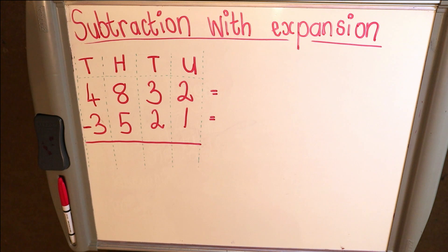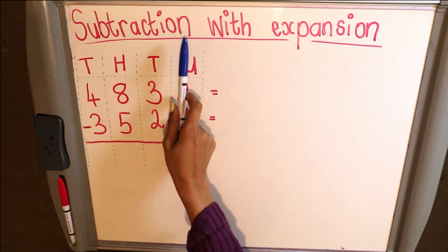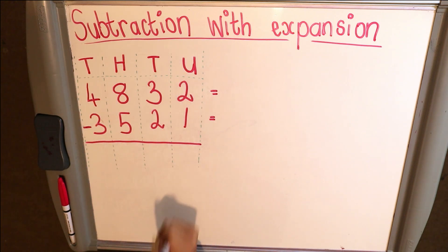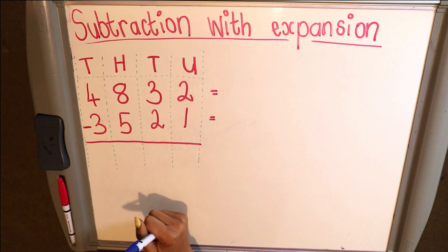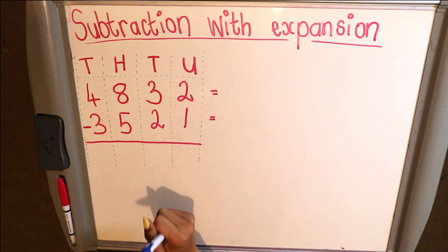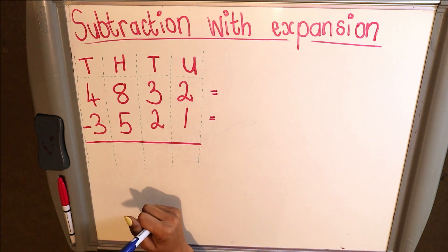Let's look at the first example. One thing you would notice is I've placed all my numbers in the particular columns. This is extremely important, especially when you're in Grade 4 and 5 — you need to place numbers in the correct column so that you don't make mistakes when you are subtracting.